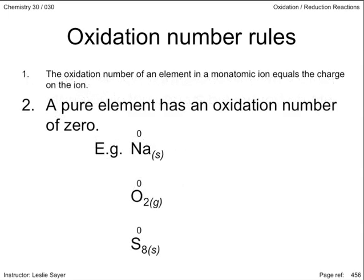Rule two, a pure element has an oxidation number of zero. The number of protons equals the number of electrons. There's no net charge. Even in diatomic and polyatomic elements, electrons are shared equally between the atoms. So there's no net loss or gain of electrons. The oxidation number is zero.